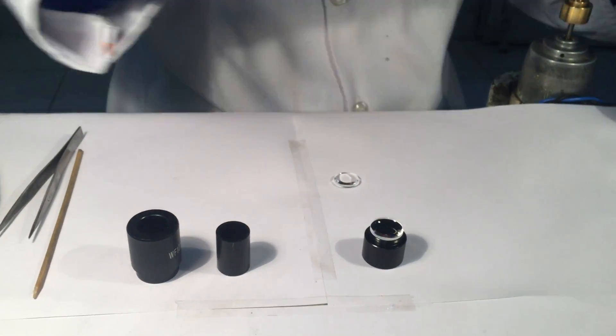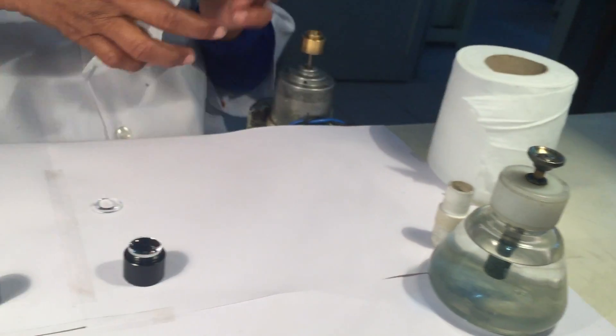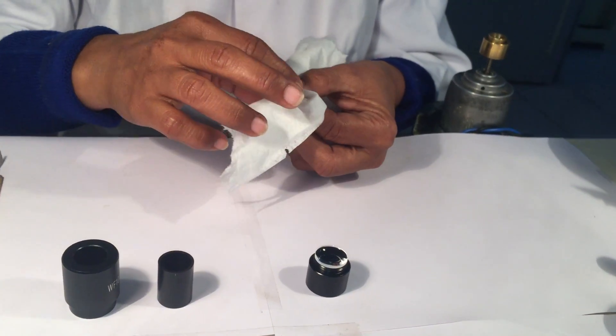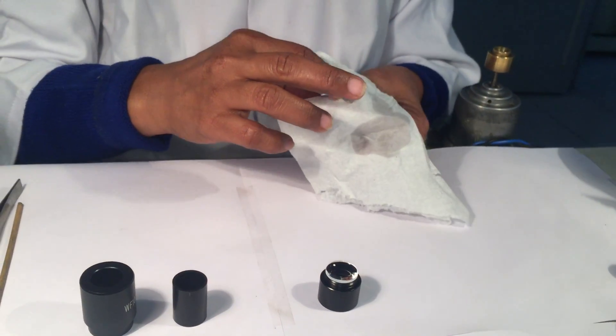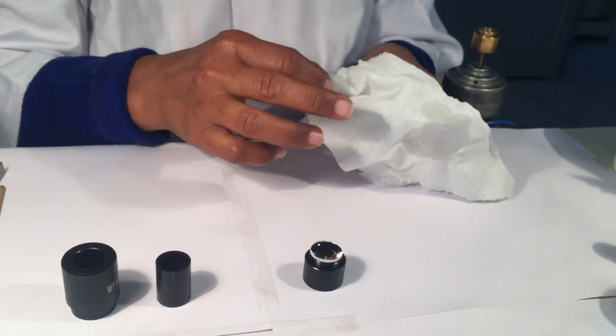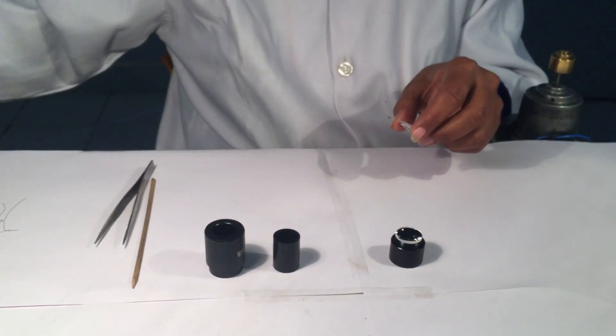So we will take the eye lens now. Same process, we will take a dry tissue paper, dip it with spirit and clean the surface of the lens. And then wipe it properly with the dry part of the tissue paper. Then air blow the same.